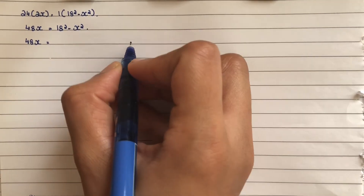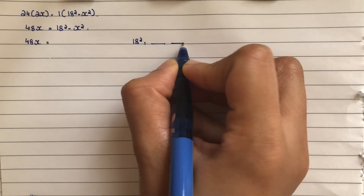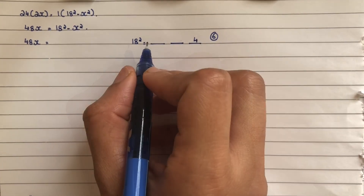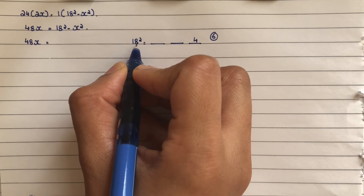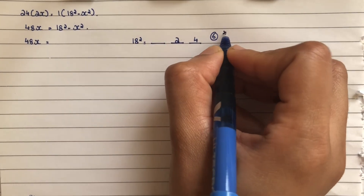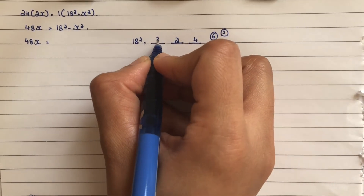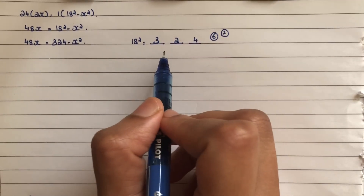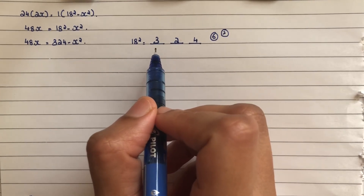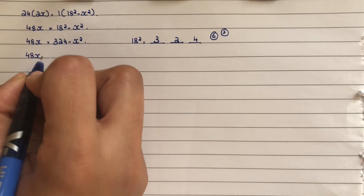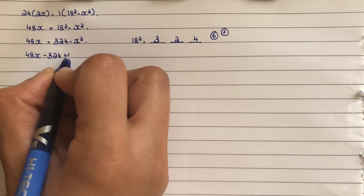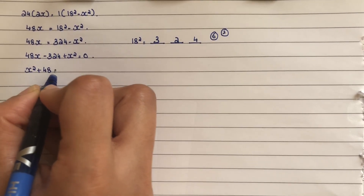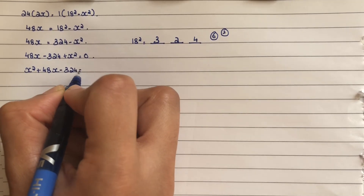Now 18 squared equals 324. So the equation becomes 48x equals 324 minus x squared. Rearranging: x squared plus 48x minus 324 equals 0.